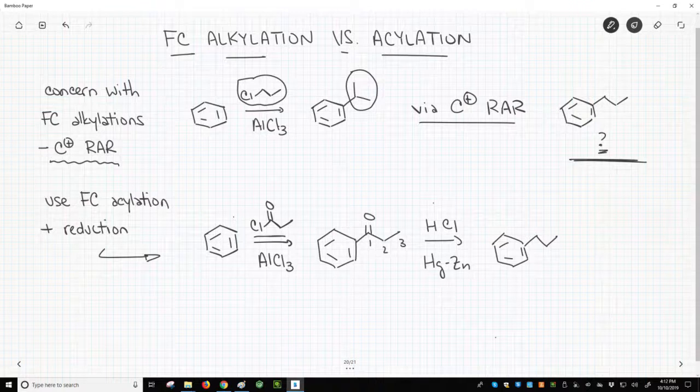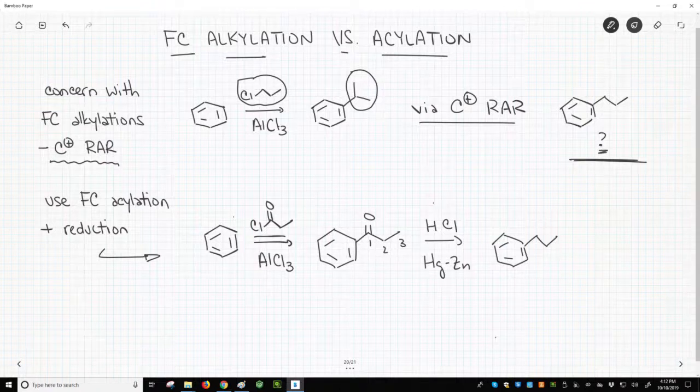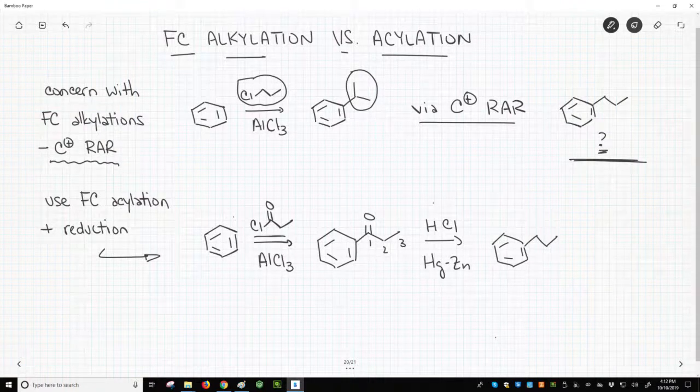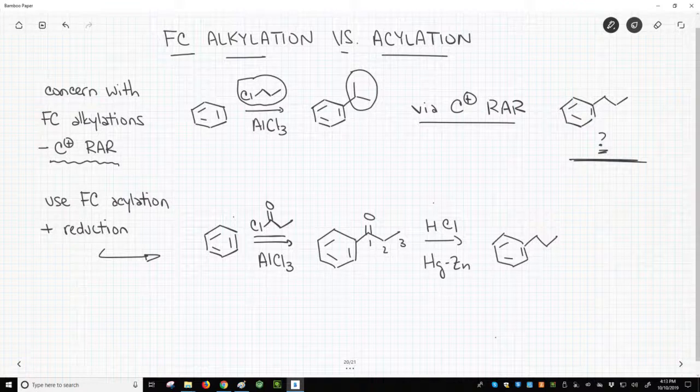As you learn more organic chemistry and see more reactions, you will recognize how different reactions can be used together to accomplish transformations that would be difficult to achieve otherwise. The use of the Friedel-Crafts acylation with a reduction to address a shortcoming in the Friedel-Crafts alkylation is an example of this idea.